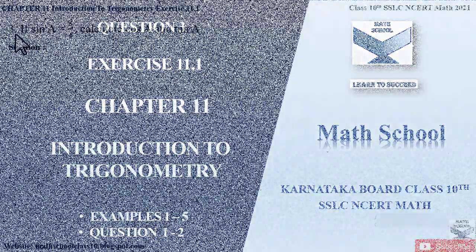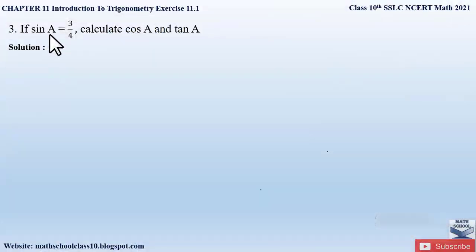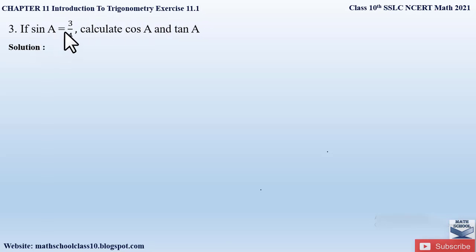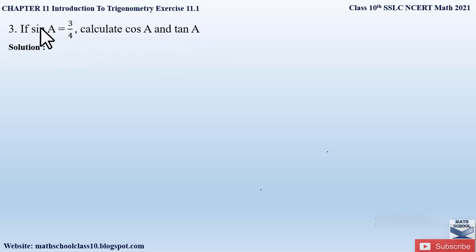Now let us begin with today's video. Question number 3 from exercise 11.1, chapter 11, Introduction to Trigonometry says: if sin A is equal to 3 by 4, calculate cos A and tan A. Here they have given us the value of sin A and we have to determine cos A and tan A. So let us first write down: given sin A = 3/4.